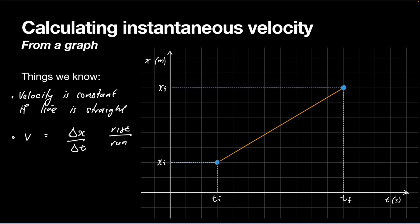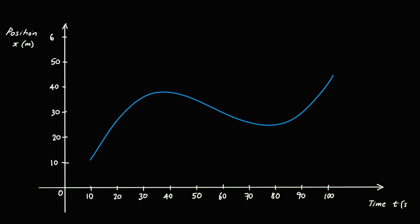What if we want to calculate the velocity at a single point in time? Here we've got a position-time graph where it's not a straight line anymore — it's curved. We can work out average velocities by taking two different points, but we want to be able to answer the question: what is the velocity at, say, t equals 50 seconds? How would we do that?